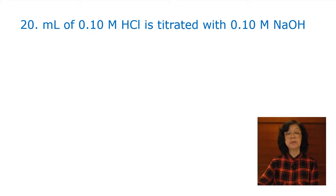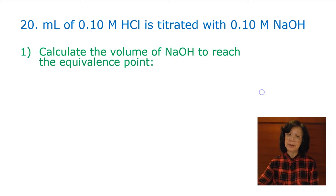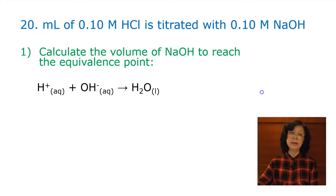Here's the problem. 20 milliliter of 0.1 molar HCl titrated with 0.1 molar sodium hydroxide. First, we need to calculate the volume of the strong base to reach the equivalence point.